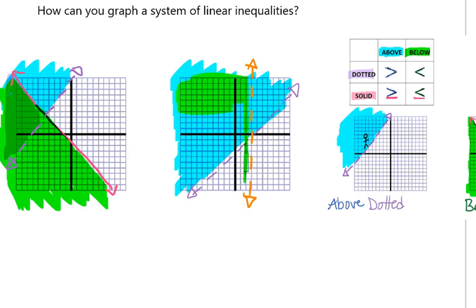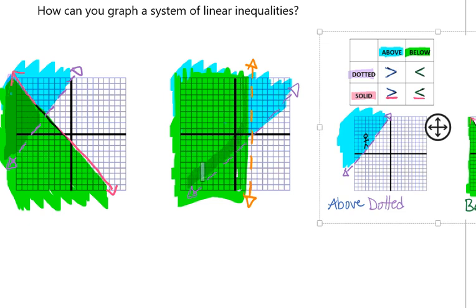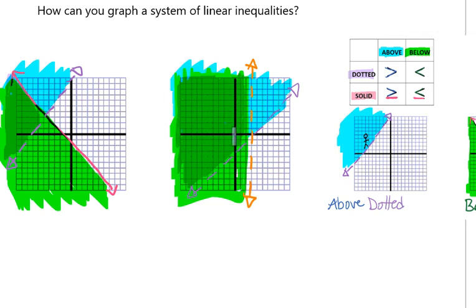So here we'd be looking at this area here. And so the answer to our solution would be where is it shaded in both places? And that answer is going to be right here. That's where we see both the blue and the green being shaded. So that would be our solution.